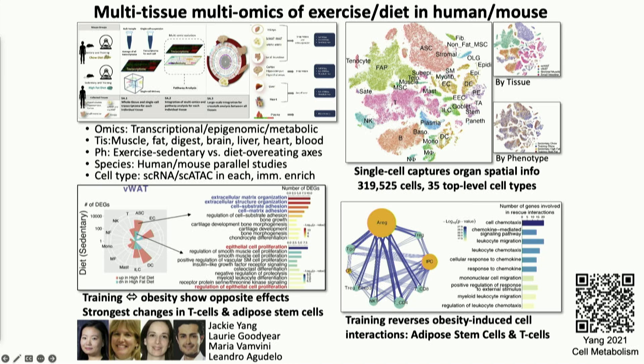We can then start asking about the impact not just in one tissue, but in multiple tissues simultaneously. We can take cohorts of humans and mice, subject them to diet and exercise interventions, and see how those are changing multiple tissues in the body simultaneously — identifying the cells and circuits mediating the beneficial effects of exercise so that we can alter those circuits and recapitulate the effects of exercise for people who might be bedridden or simply not have the time.